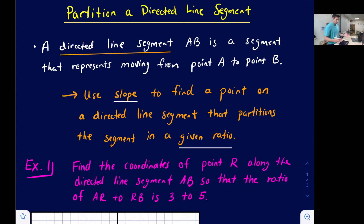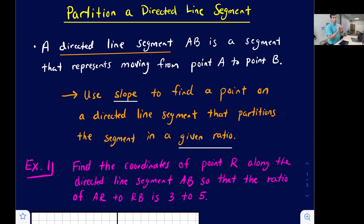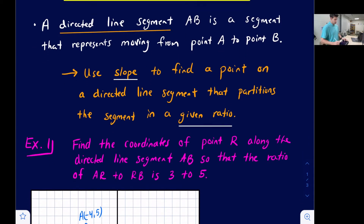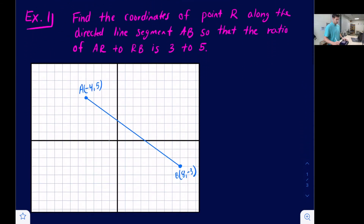We're going to use slope — the slope of the line — to find a point on a directed line segment that partitions the segment into a given ratio. This basically splits the segment into some parts, like three parts and two parts, or one part to four parts. The ratio we use will be given to us.